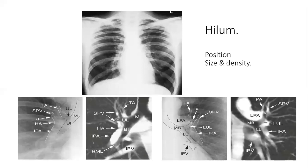The left hilum is higher because the left pulmonary artery goes above the level of the left main bronchus, making the left hilum appear higher than the right, where the right pulmonary artery does not go above the level of the bronchus. The right hilum is usually at the level of the sixth or seventh posterior intercostal space. Increased hilar density compared to the opposite side suggests either calcified lymph nodes or an enlarged pulmonary artery. To measure hilar size, measure the hilar transverse diameter one centimeter below and lateral to the hilar angle — it should be within 15–16 mm. A lobulated hilum suggests enlarged lymph nodes; loss of concavity suggests enlarged pulmonary artery.